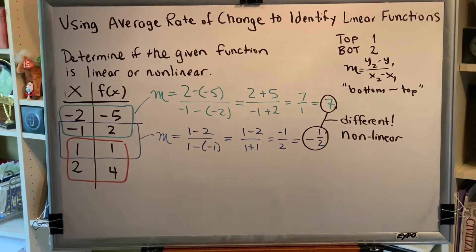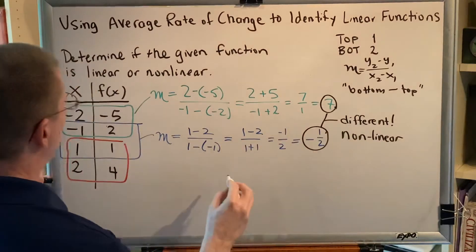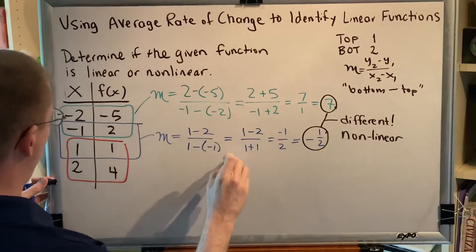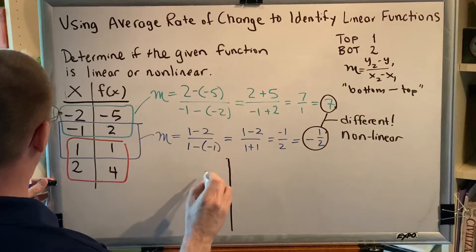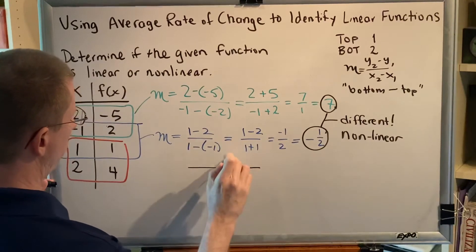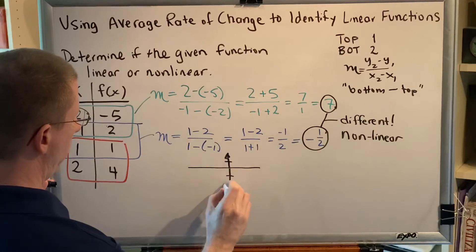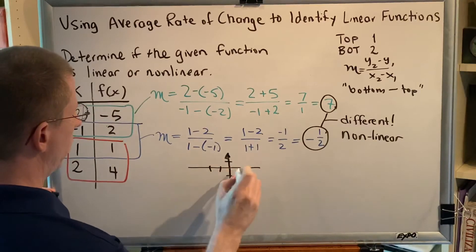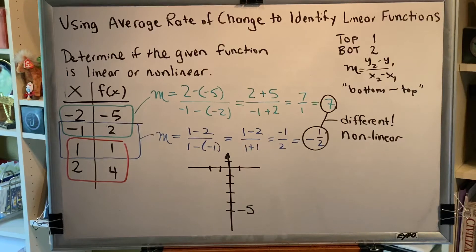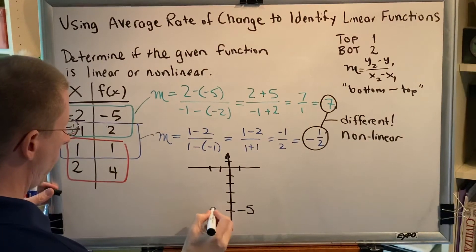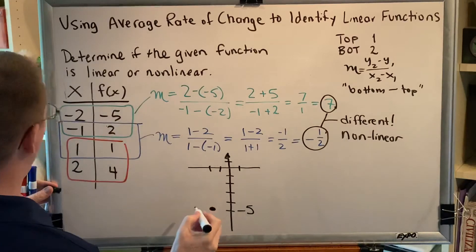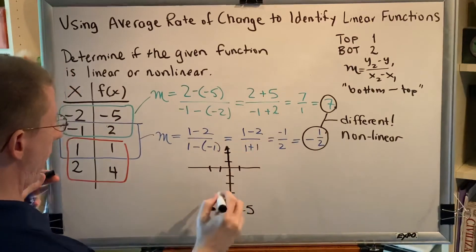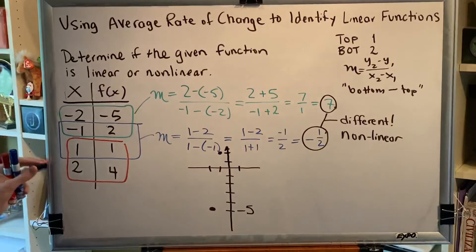Let's provide a brief sketch showing why these must be nonlinear. I'm only going to plot three of the points. I need to go from a y value of negative five up to one, so the y-axis goes from negative five up to two. My x's are going to go from negative two to one. So negative two, negative five would be here; negative one, positive two would be here; and one, one would be here.